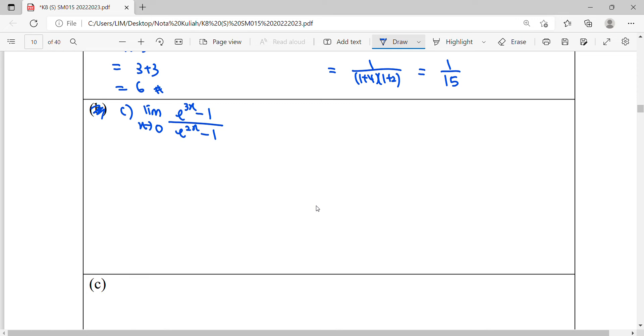So for this function, exponential function over exponential function, our first trial here will be substitute 0, right? e to the power of 0, 1, 1 minus 1, 0. So 0 over 0 will be defined as indeterminate form. So for this case, how are we going to simplify? e to the power of 3x over e to the power of 2x, we can do long divisions. Simplify the function first.